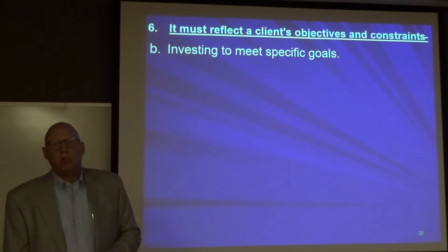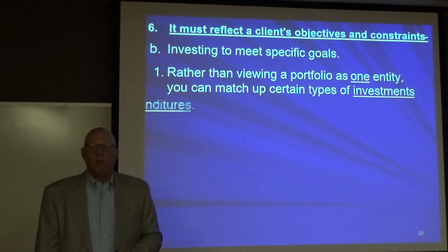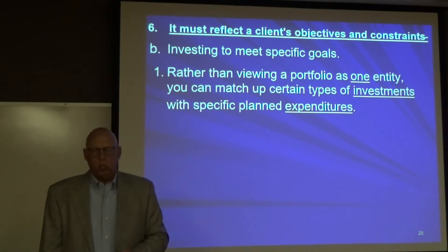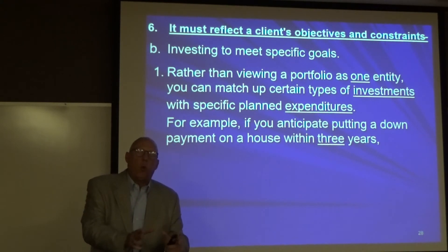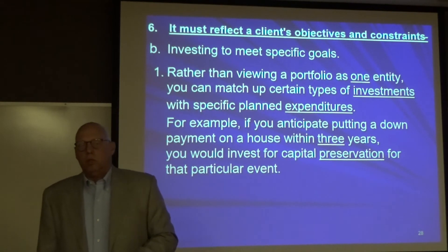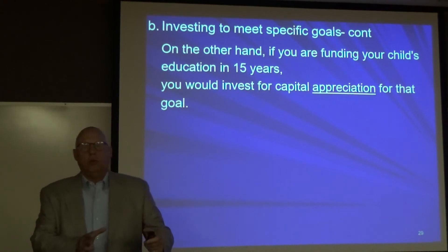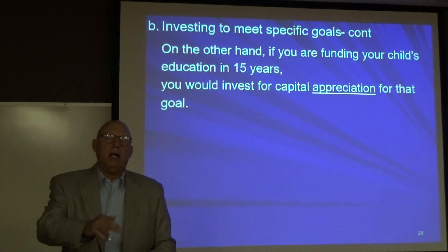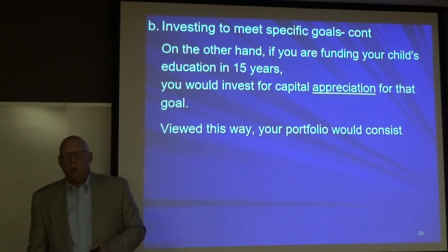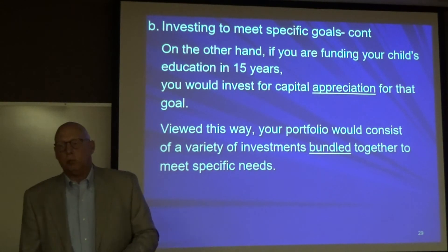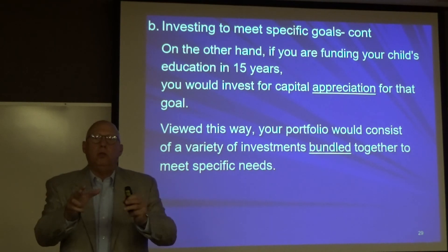Another way to look at your portfolio is to invest to meet specific goals. Rather than viewing a portfolio as one entity, you can match certain investments with specific planned expenditures. For example, if you anticipate a down payment on a house in three years, you'd invest that portion for capital preservation. If you're funding a child's education in 15 years, you'd invest for capital appreciation and then shift to preservation as the date approaches. So your portfolio can consist of different buckets set up to meet certain goals.